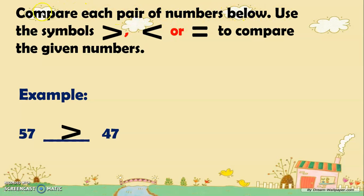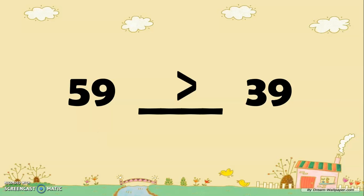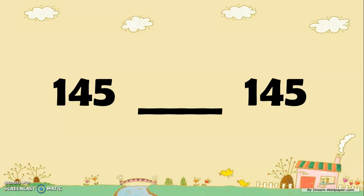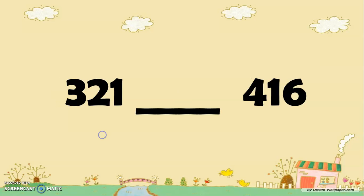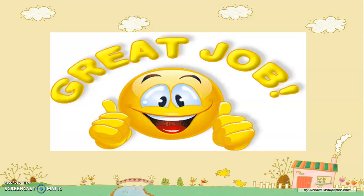Now we're going to practice. Compare each pair of numbers using the symbols more than, less than, or as many as or equal. For example, 57 is more than 47. First: 59 blank 39 — the answer is 59 is more than 39. Next: 145 blank 145 — the answer is 145 is as many as or equals 145. Next: 321 blank 416 — 321 is less than 416. And 568 blank 558 — 568 is more than 558. Great job, Grade 2! Now we already know how to use symbols to compare numbers.